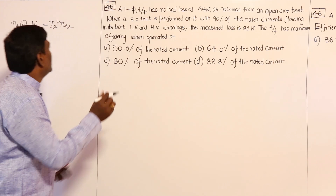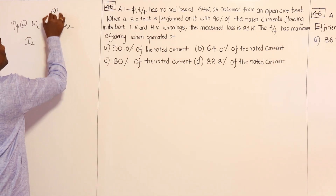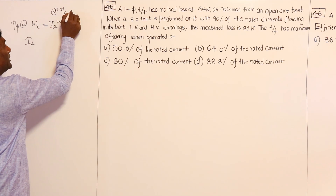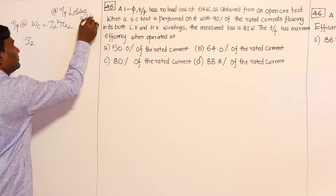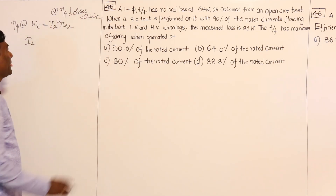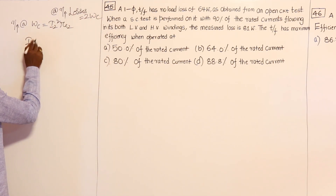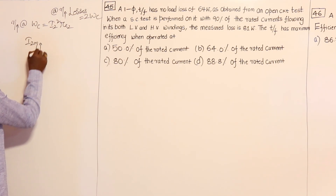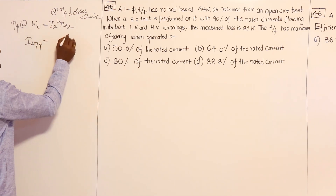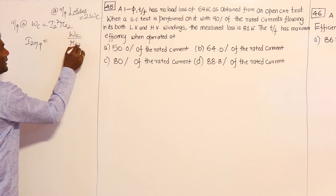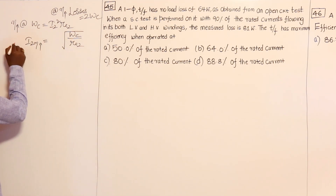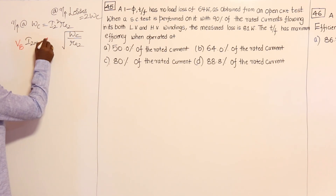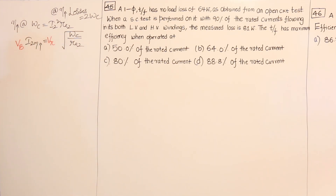At maximum efficiency, total losses equal 2 times core loss. By the equation — core loss equals copper loss — the current I₂ at which maximum efficiency occurs equals the square root of core loss divided by Re₂. Adding rated voltage as the base value, the equation remains the same.